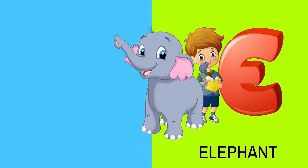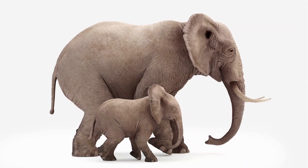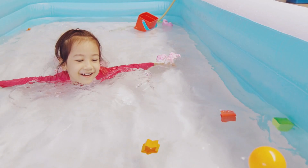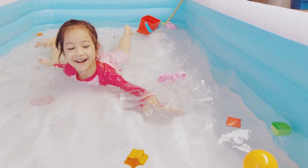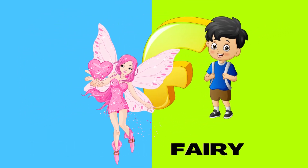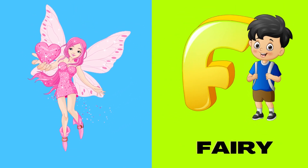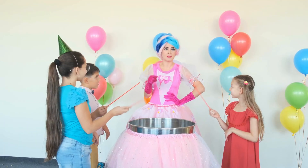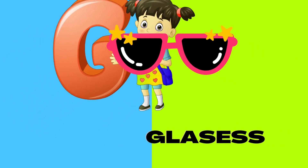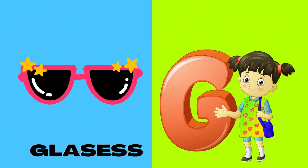E is for Elephant. E-Elephant, E-Elephant. Elephant. F is for Fairy. Fairy, Fairy. F-Fairy. G is for Glasses.